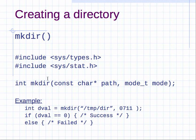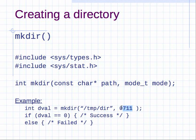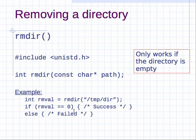If you want to create a directory, you can call the mkdir function — it's also a command, but this is the C function — where you give it a path and a mode. This will create, for example, a directory called /temp/dir with permissions 711. That is, 7 is read-write-execute and 1 is just execute. So this says: create a directory with read-write-execute permissions for me and only execute permissions for my group and other users.